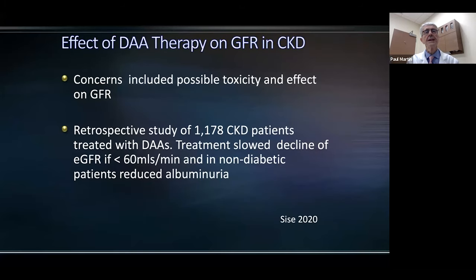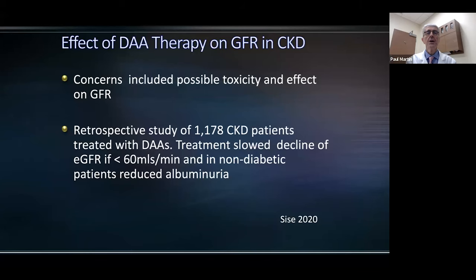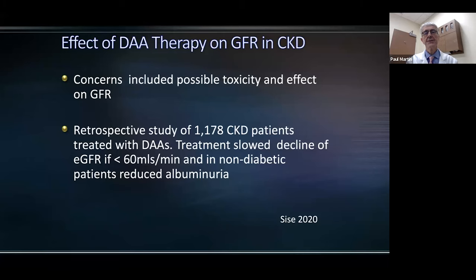One of the issues had been whether direct-acting antiviral therapy could impact renal function in patients with chronic kidney disease. This is a retrospective study from Dr. Cisse in over 1,000 chronic kidney disease patients treated with DAAs. Treatment slowed decline of the estimated GFR if it had been less than 60 mL/min at baseline, and in non-diabetic patients, it reduced albuminuria. There was no evidence that treatment accelerated the decline in renal function — indeed, it appeared to slow it.